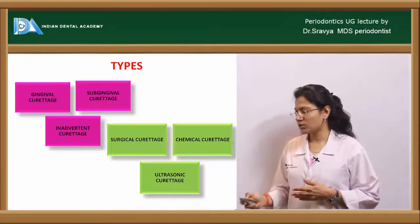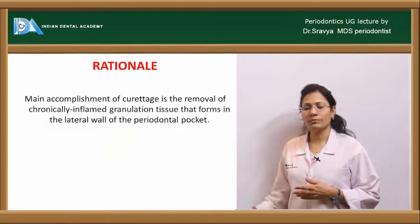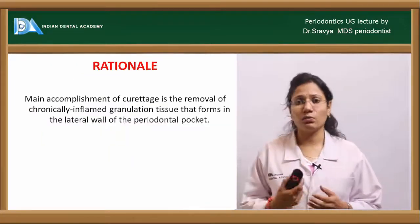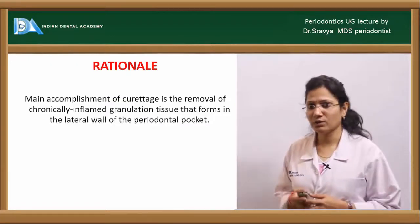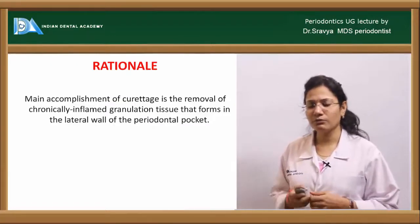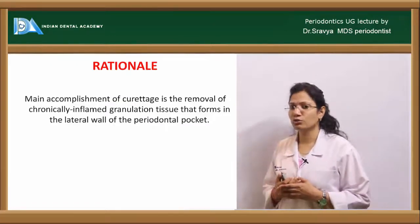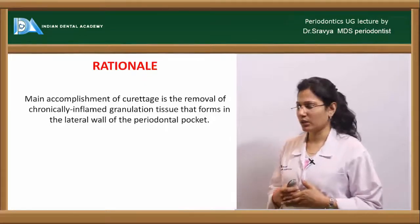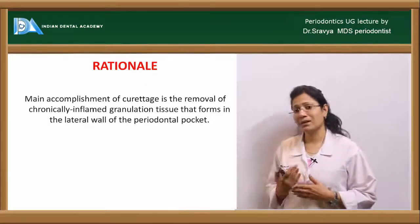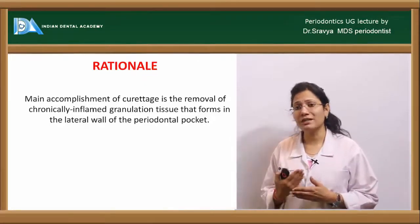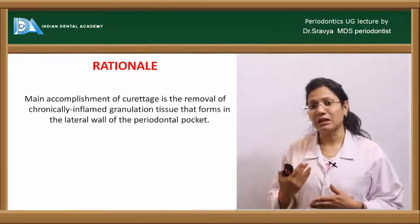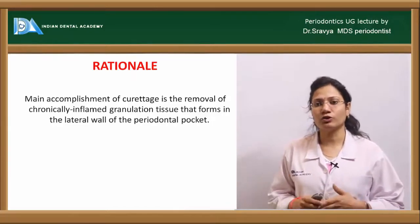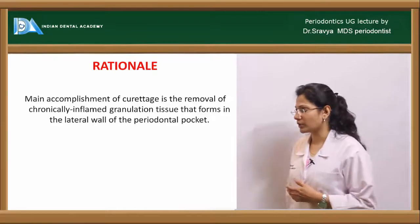Gingival curettage means scraping the soft tissue wall of the sulcus. Subgingival curettage goes quite deep — removing diseased tissue between the gingival margin and alveolar crest, going beneath the base of the pocket. The rationale behind curettage is to remove chronically inflamed granulation tissue covering the soft tissue wall of the periodontal pocket.